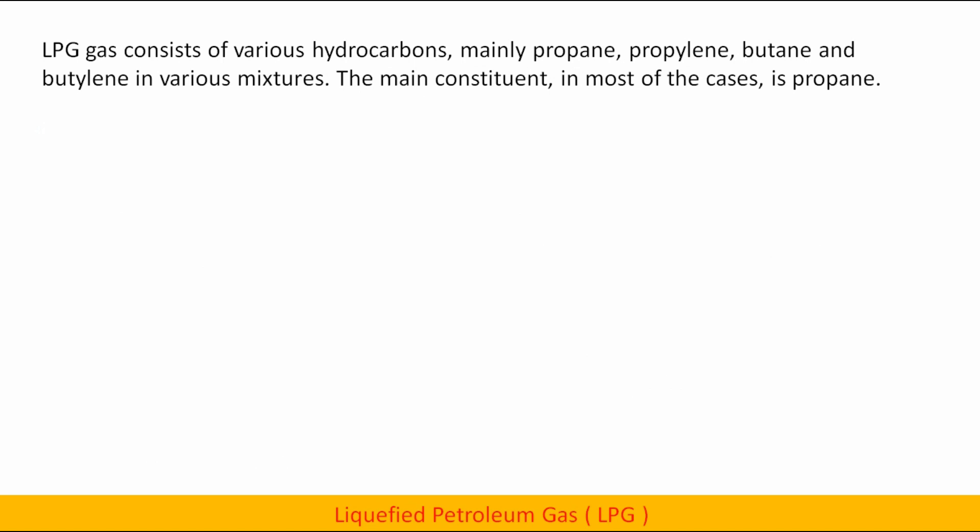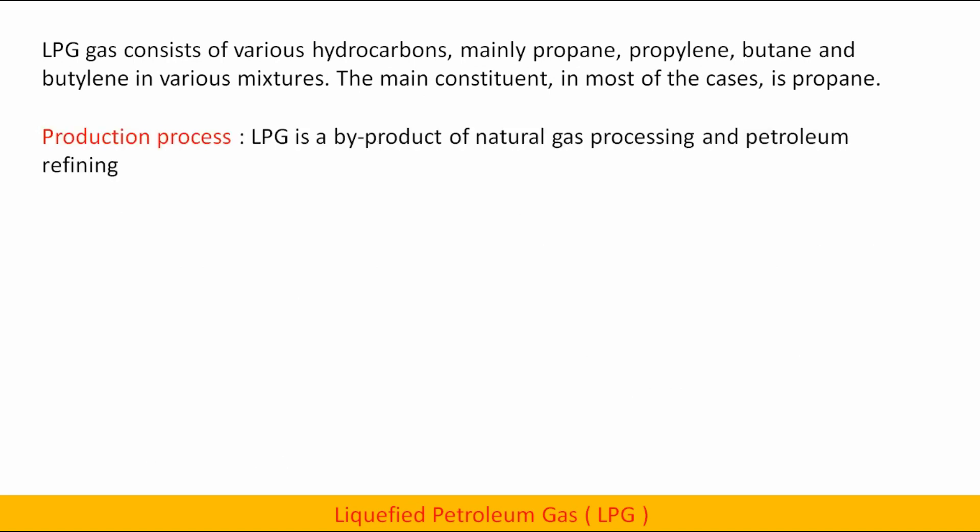LPG consists of various hydrocarbons, mainly propane, propylene, butane and butylene in various mixtures. The main constituent in most cases is propane. LPG is a by-product of natural gas processing and petroleum refining.